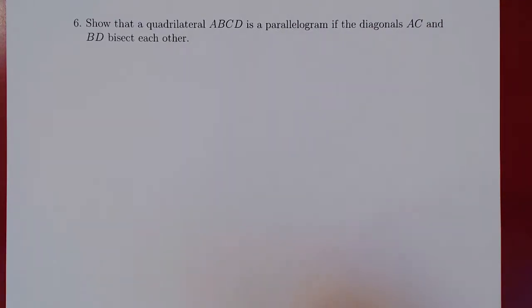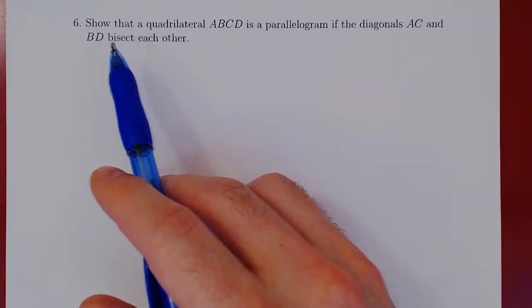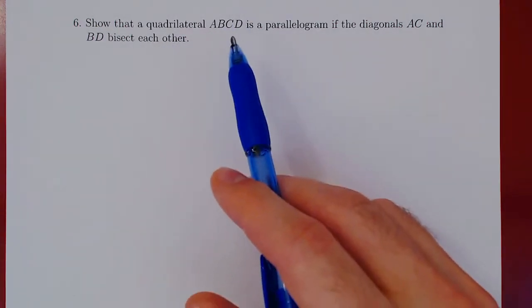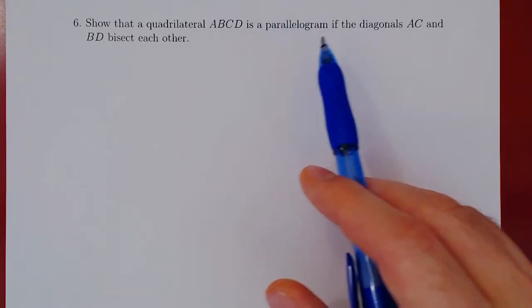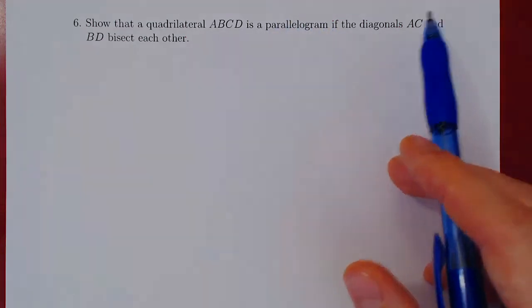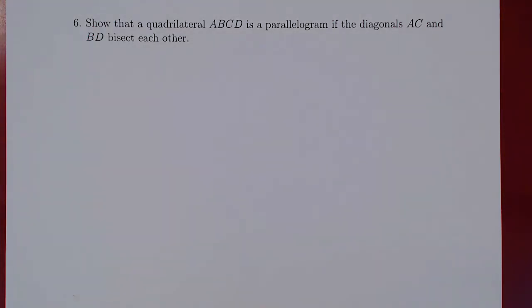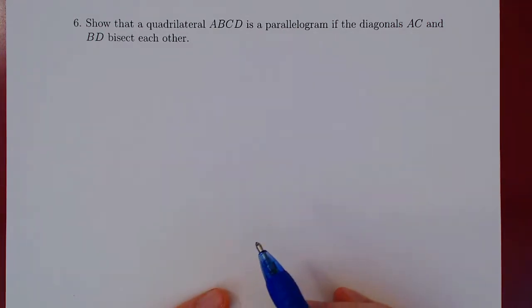In this video, we want to consider another example of geometric vectors, and here's a very classical result of geometry. We want to show that a quadrilateral ABCD is automatically a parallelogram if both of its diagonals bisect each other. There are a lot of ways to prove this result, but we choose to prove it using geometric vectors. So as always, let's draw a picture.